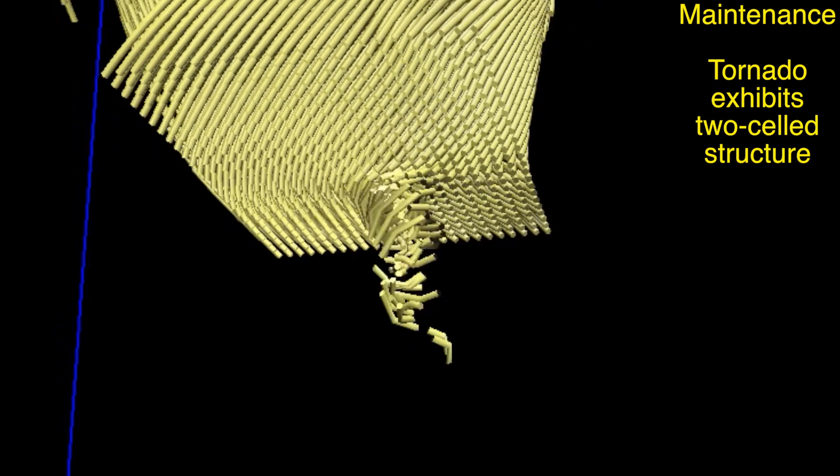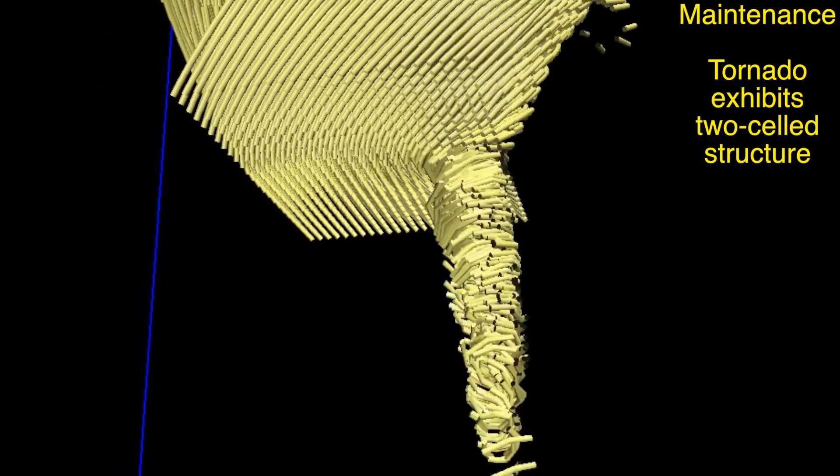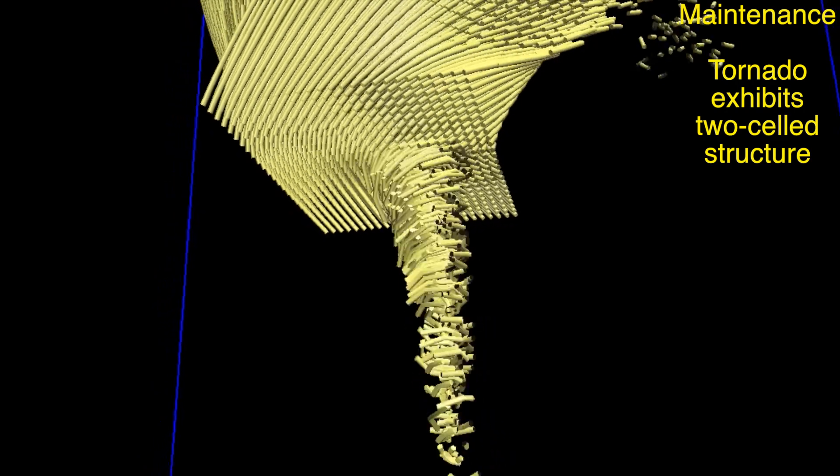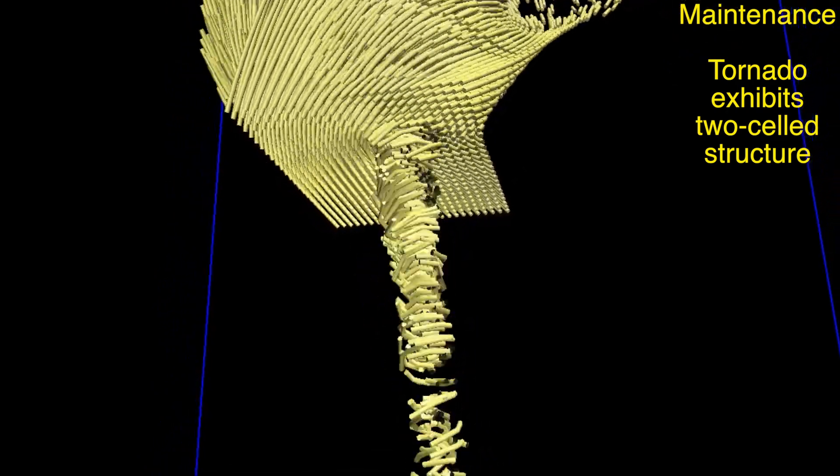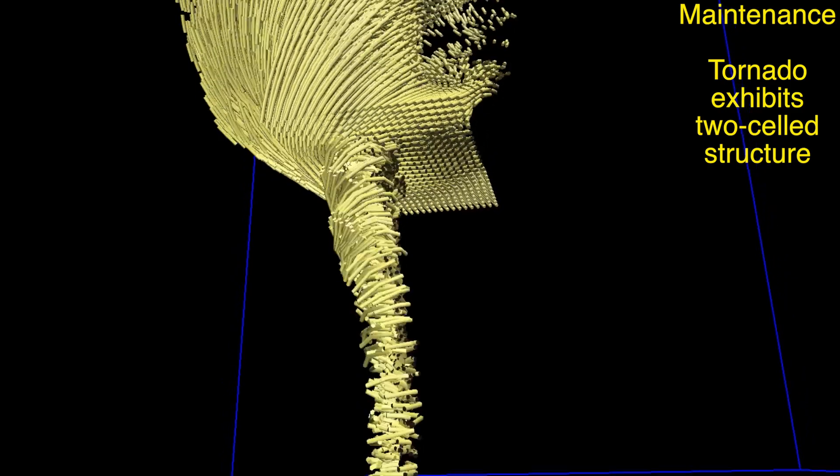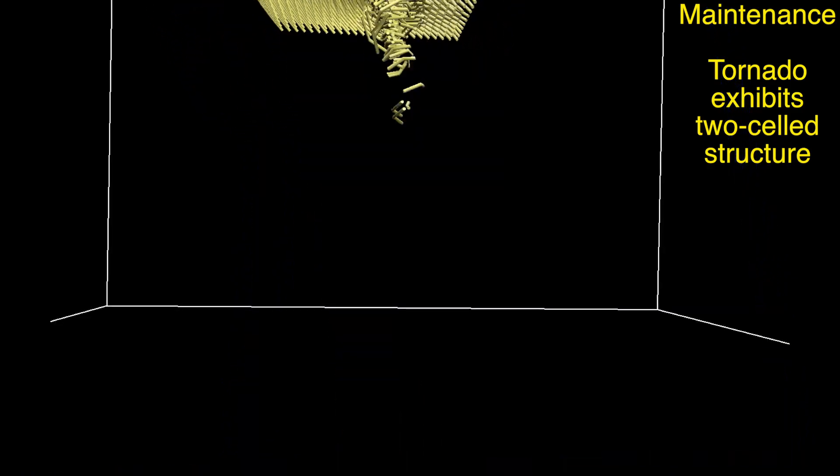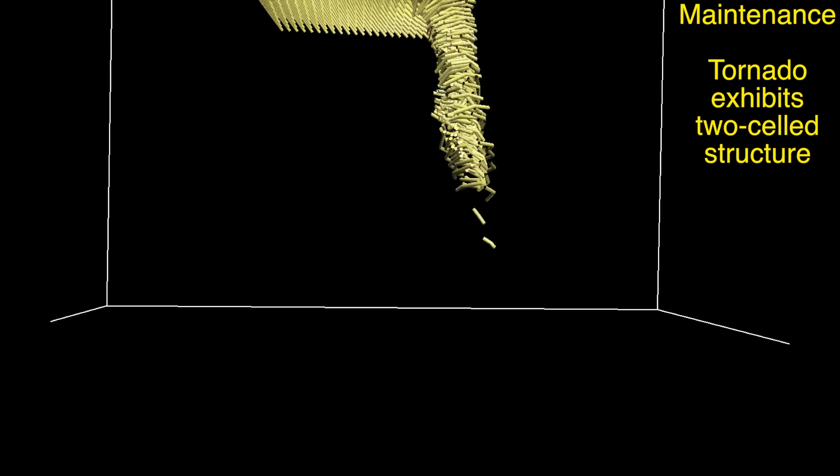In the following two sequences, we release a horizontal plane of particles every two seconds around the tornado about one and a half kilometers above the ground. The tornado exhibits a two-celled structure which is characterized by a downdraft in the center of the tornado. Particles can be seen descending and recirculating upwards into the updraft as would be expected with a two-celled tornado.